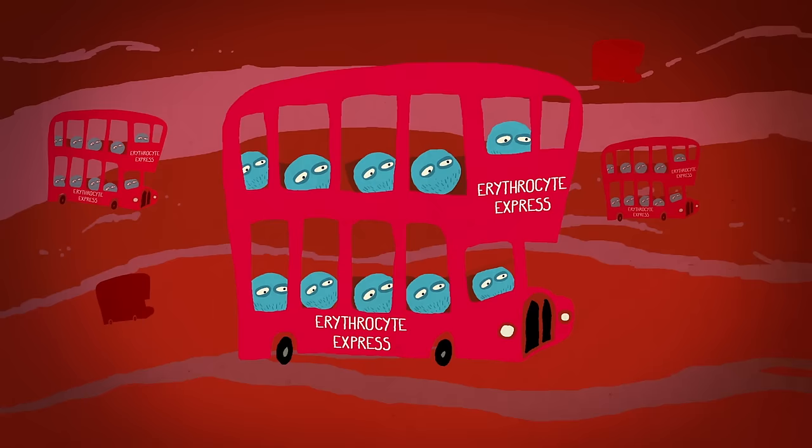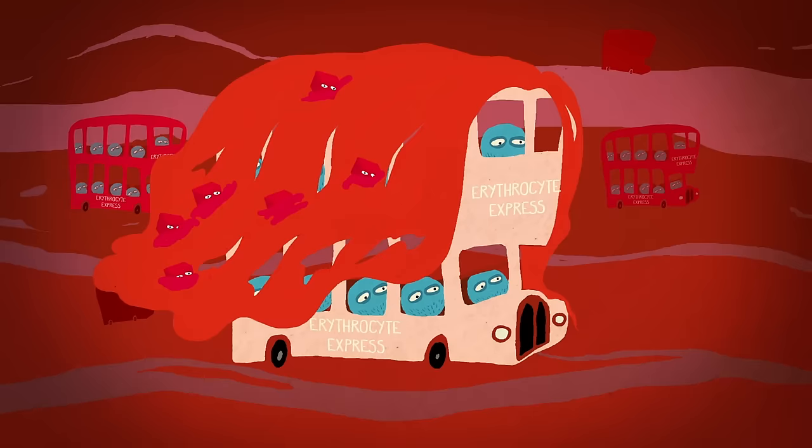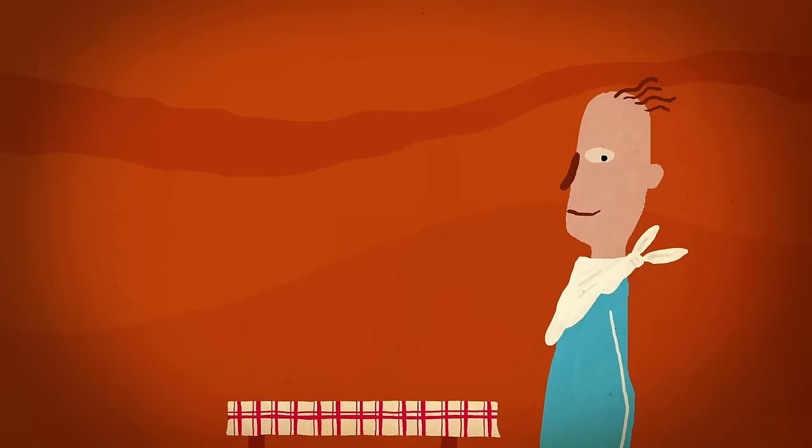This is where our 20 trillion red blood cells come in. Each one contains about 270 million oxygen-binding molecules of hemoglobin, which is what gives blood its scarlet hue.